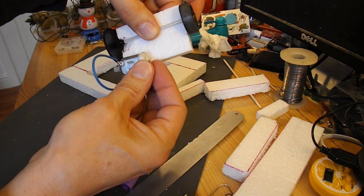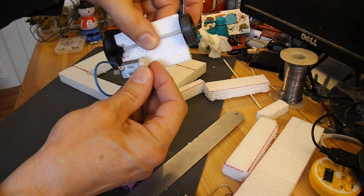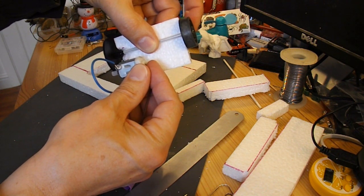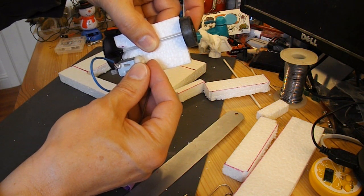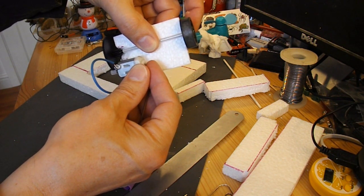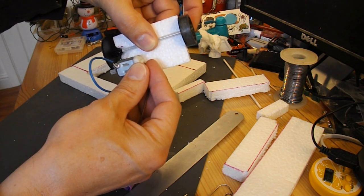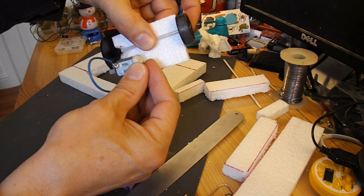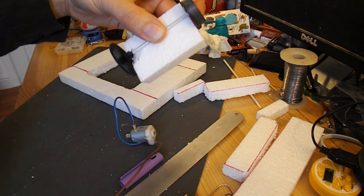And anybody who's worked with polystyrene foam will know that hot glue and polystyrene don't go together very well. So I'm going to have to be a bit careful. It tends to melt the polystyrene. What I really want is a cool melt glue gun. And I haven't got one of them, I've only got the hot melt. So we'll find out.